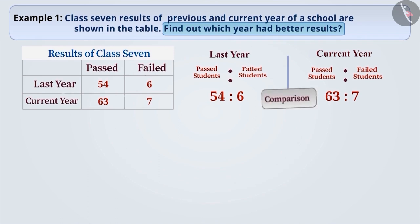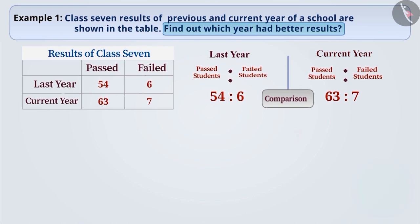Now compare these two ratios. To find out whether the two ratios are equivalent ratios or not, we express both the ratios in the form of fractions. For example, we would express 54 is to 6 as 54 by 6 and 63 is to 7 as 63 by 7.